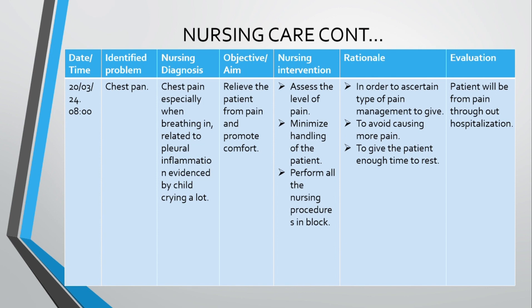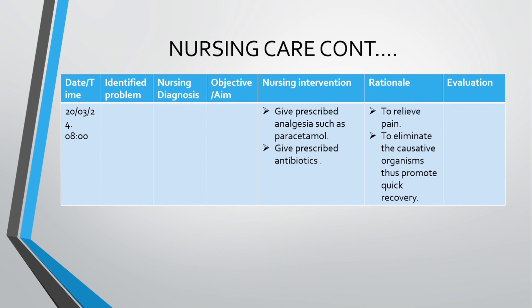The second intervention is to minimize handling of the patient to avoid causing more pain. Also, perform all nursing procedures in block or at once so that the patient has enough time to rest. Give prescribed analgesics such as paracetamol to relieve pain. The fifth intervention is to give prescribed antibiotics such as benzyl penicillin to eliminate the causative organisms and promote quick recovery.